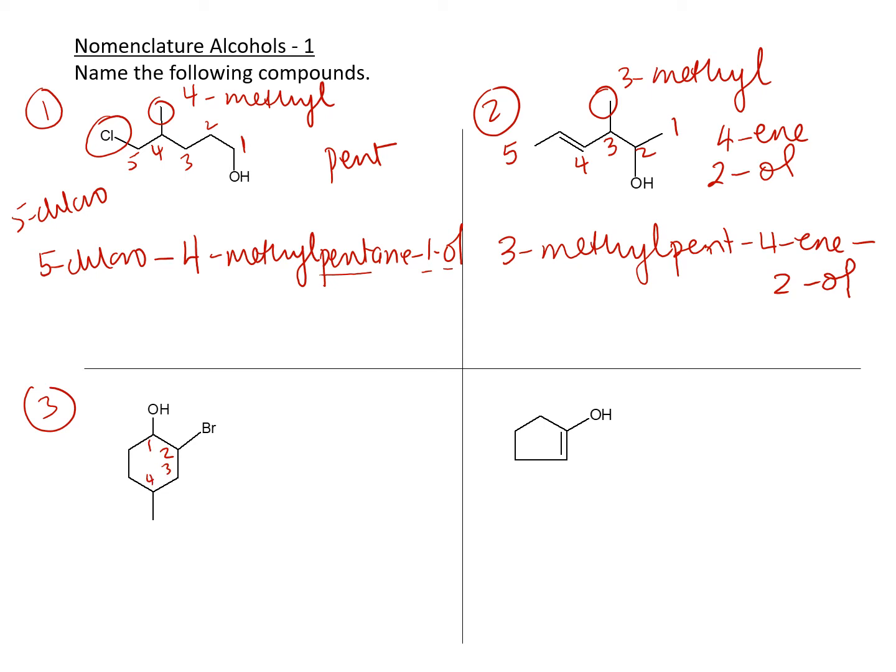1, 2, 3, 4, 5, 6. You make sure that you number towards the substituents, just like we learned for alkanes. This is going to be 2-bromo-4-methyl. Now we'll put that in order: 2-bromo-4-methyl-cyclohexanol.